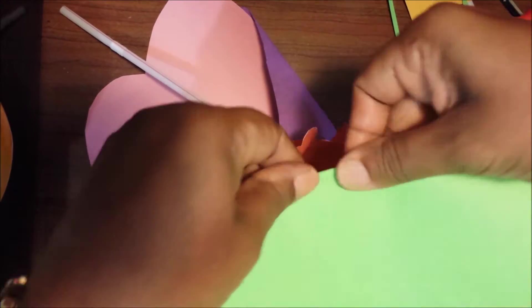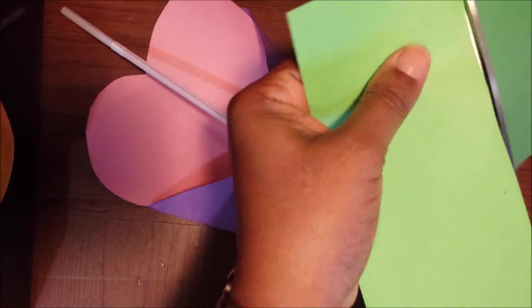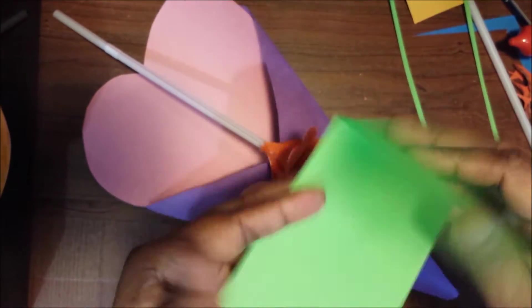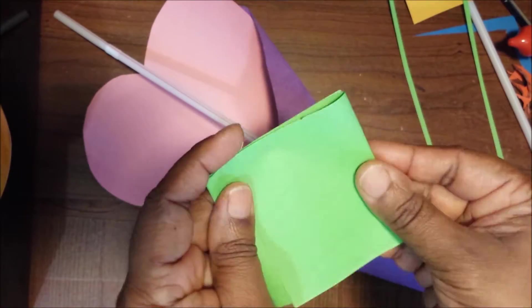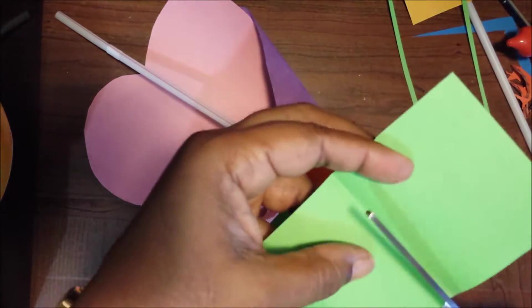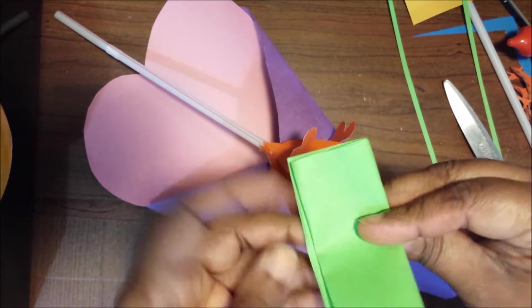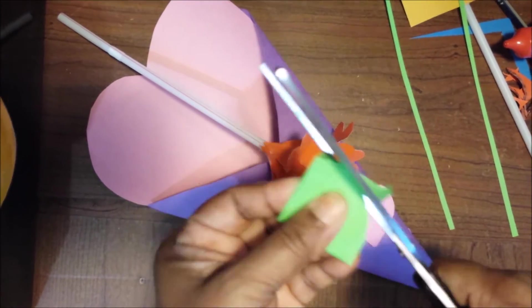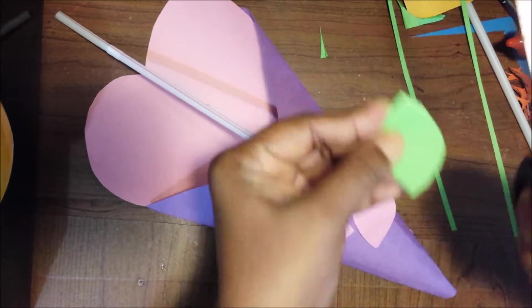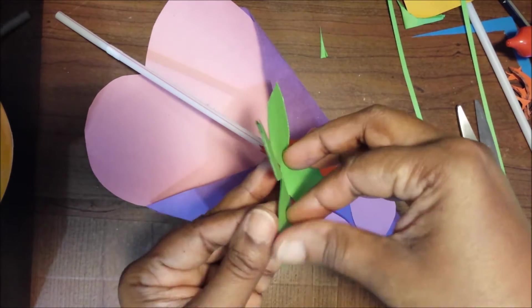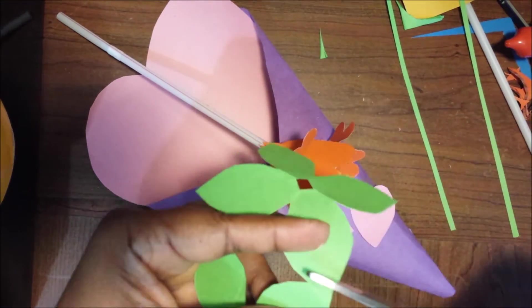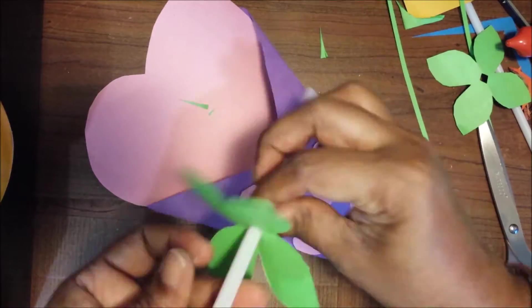Green paper strips we will take, roll it on the straw and stick it on the straw, and we can make leaves also. In this one day, I have only two flowers here. Cut the center and in this petal, insert the straw and stick it.